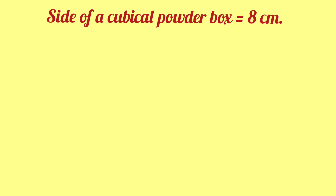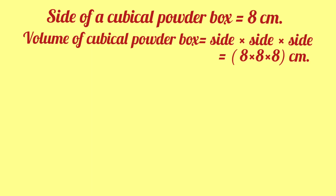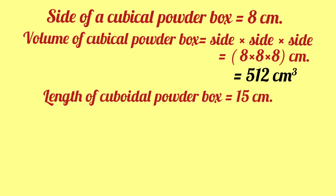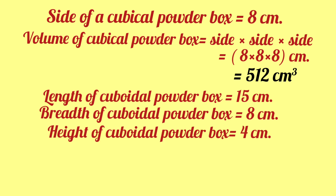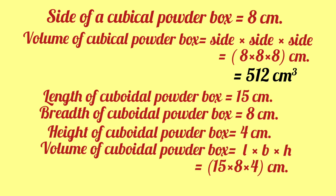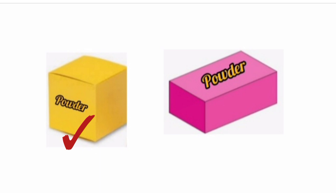We will solve it like this. Side of the cubic powder box equals 8 cm. Volume of cubic powder box equals 8 into 8 into 8 — we get 512 cm³. Length of the cuboid powder box equals 15 cm, breadth 8 cm, and height 4 cm. Volume equals length into breadth into height — 15 into 8 into 4 — we get 480 cm³. Volume of the cubic box is greater, so it can contain more powder.